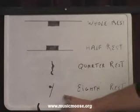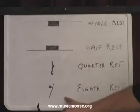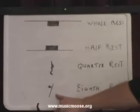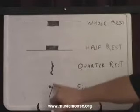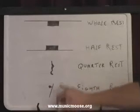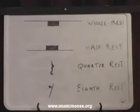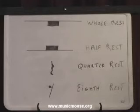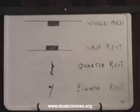Moving down to the last note we're going to be dealing with — these four notes — is the eighth rest. You can see the symbol there: it has a black dot with a slanted line connected to it. The eighth note rest is going to have a half-beat rest associated with it. We're going to be getting into this in the next lesson.